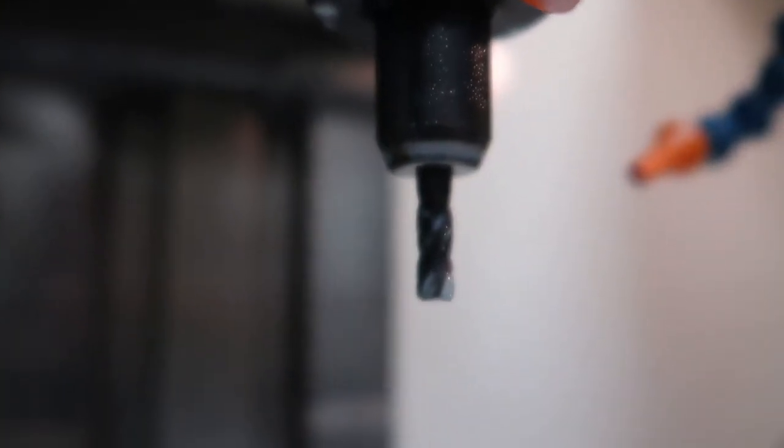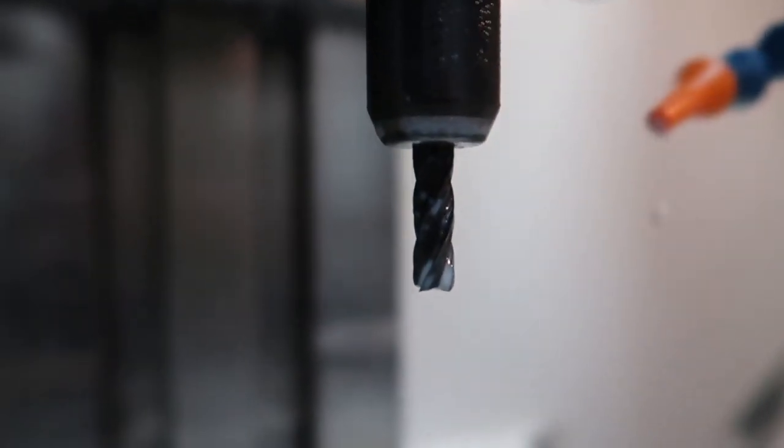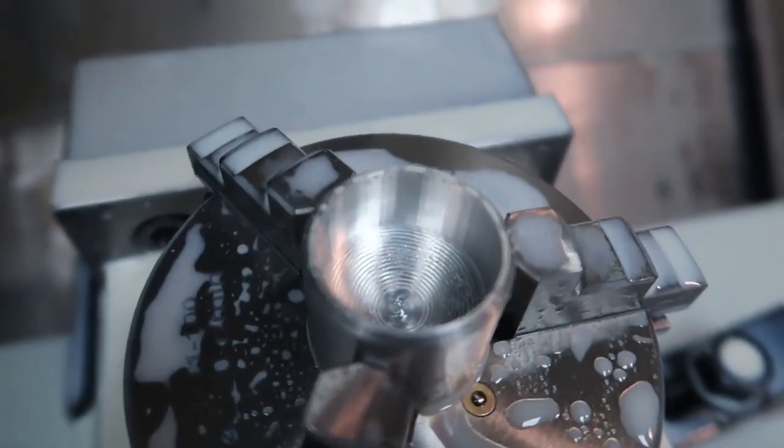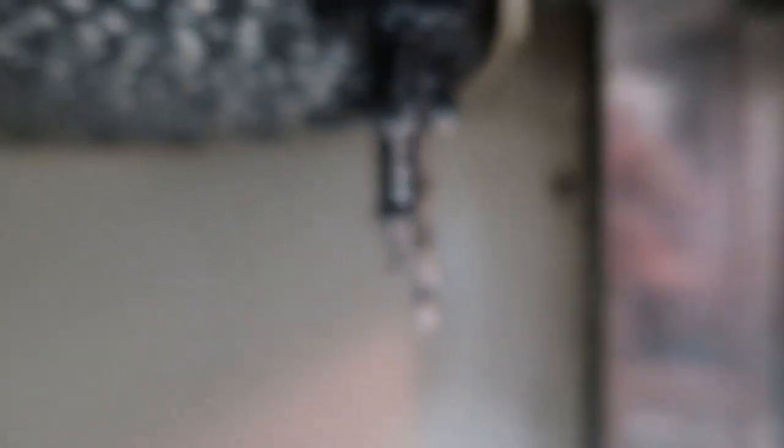So I rev everything out with a quarter inch end mill. Then I go over to the quarter inch ball end mill to finish everything out. Make it real nice and smooth.